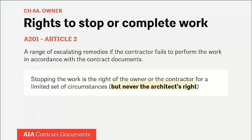A primary objective of the general conditions is to keep work going while problems or disputes are being resolved, but there are a few situations that allow either the contractor or owner to stop the work when resolution can't be reached. The owner's rights to stop or assume the work are good examples of owner power and leverage. It is never, never, never the architect's right to stop the work at any point, at any time, or for any reason — that is solely the owner's responsibility. Architects need to know the difference between actions they take and those reserved for an owner.